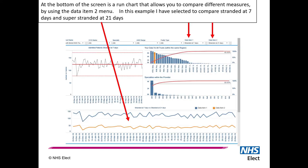At the bottom of the tool there is also an opportunity to compare things in a weekly run chart. In this example, it allows you to compare super-stranded patients at 21 days against those at 7 days.